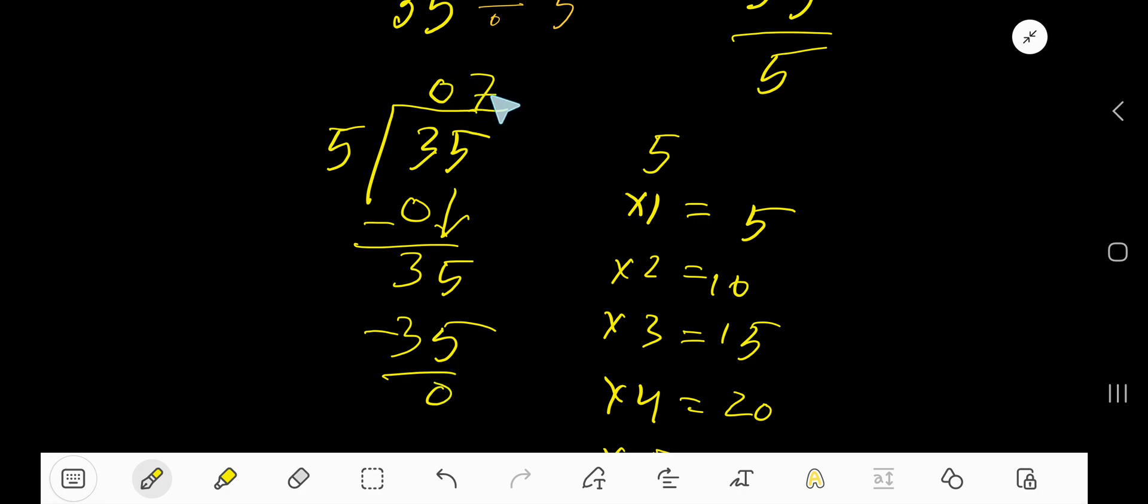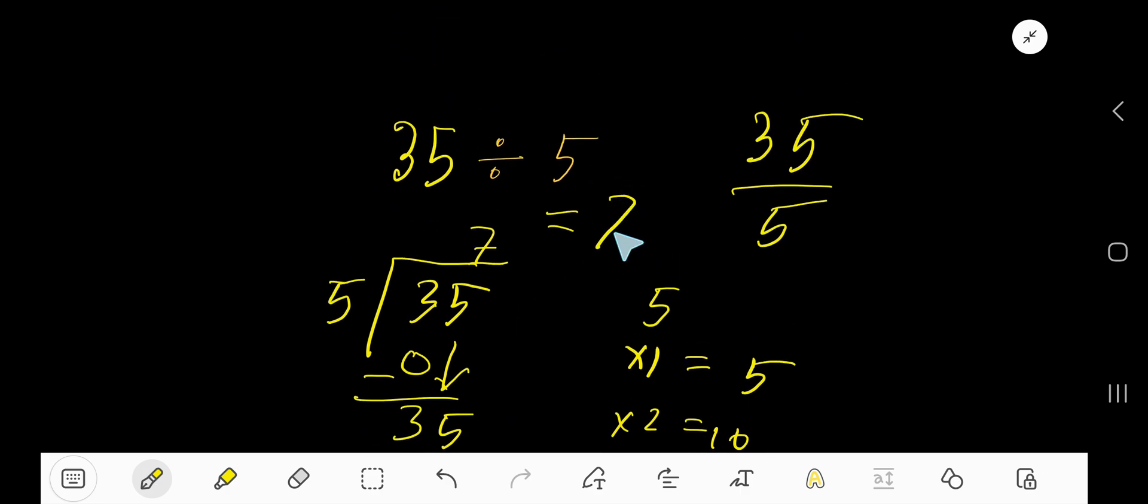This 0 is in the left-hand side of this digit, so this 0 doesn't carry any value. So, 7 is the answer. 35 divided by 5, 7.